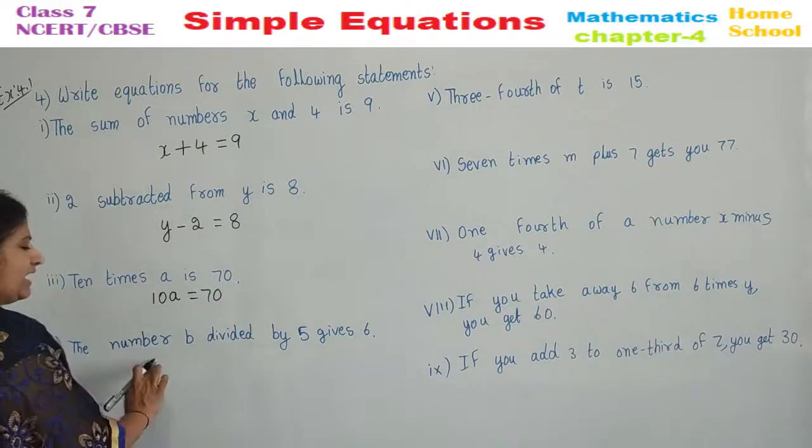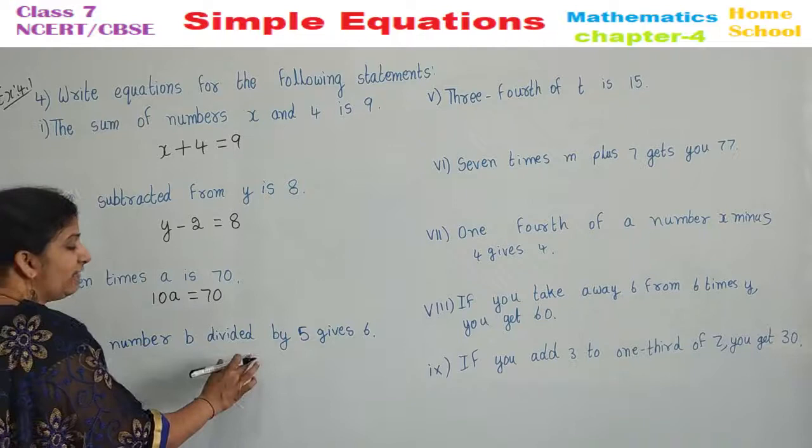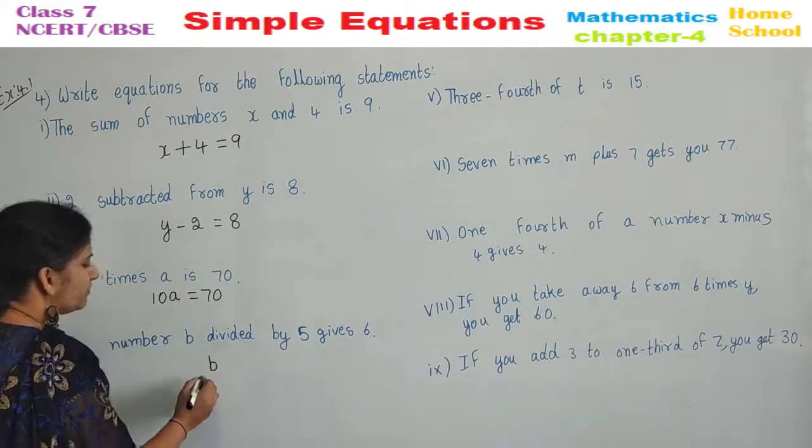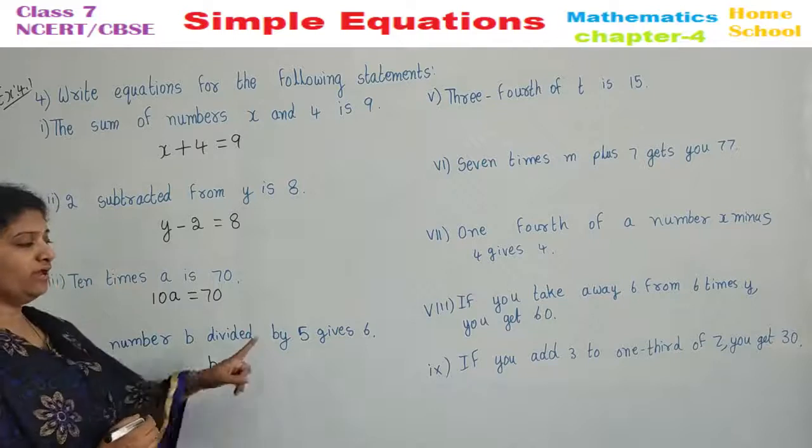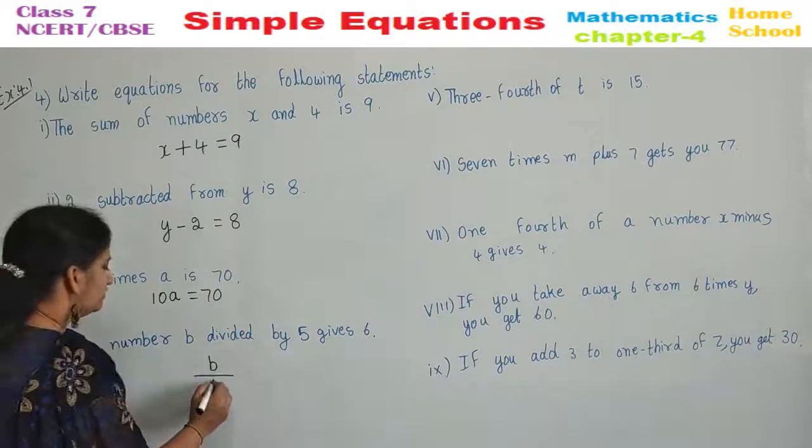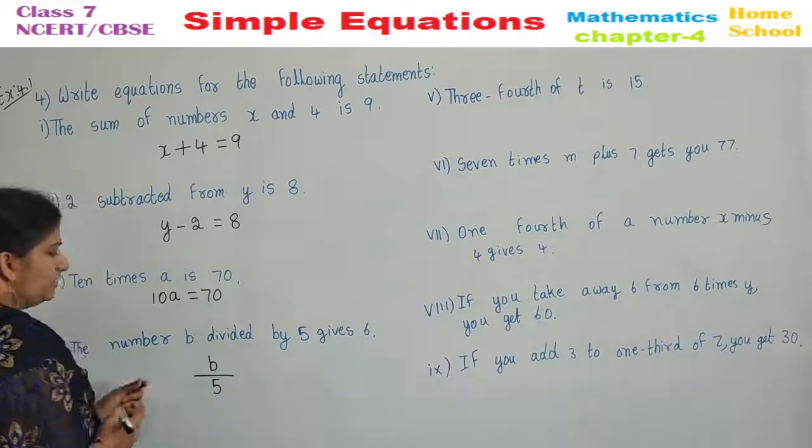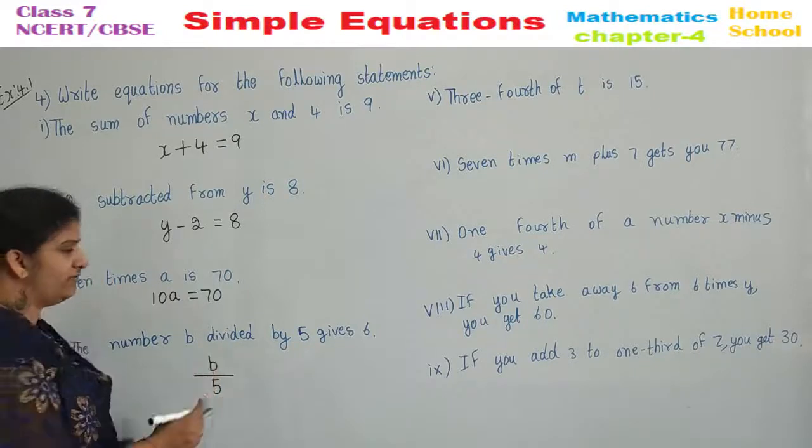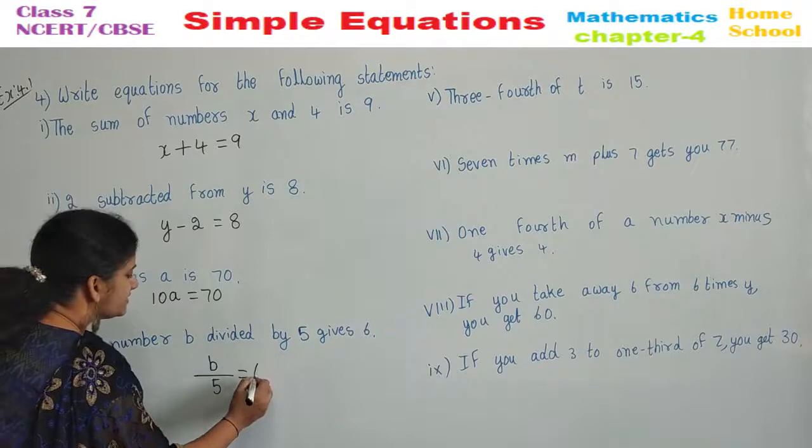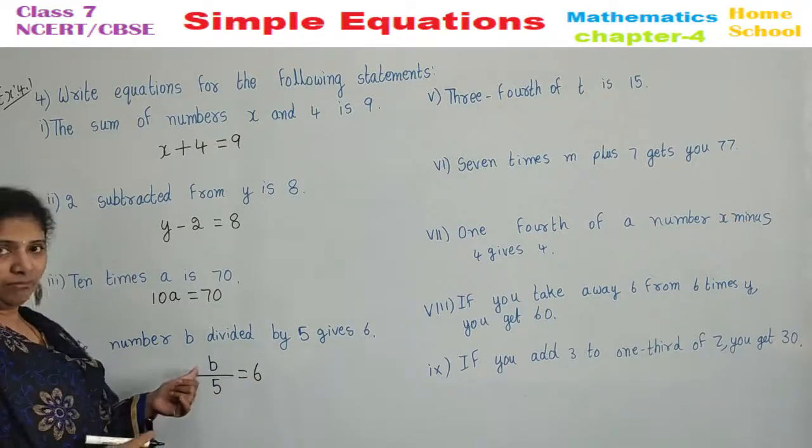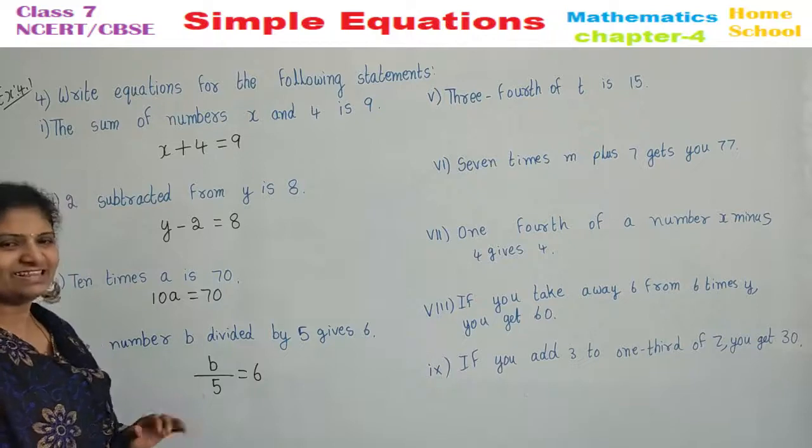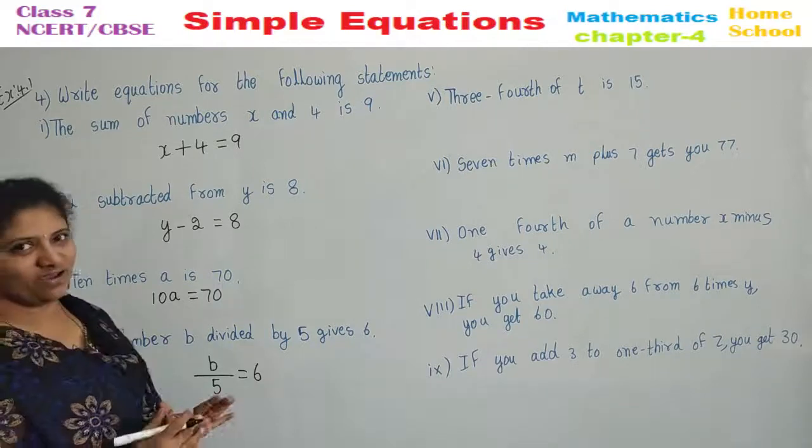Fourth one. The number B divided by. The number B divided by 5. I repeat. The number B is divided by 5 gives you 6. Number B divided by 5 gives 6. This is the way we need to frame the equations.